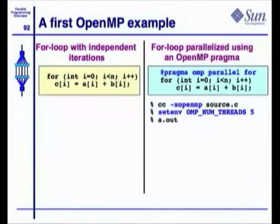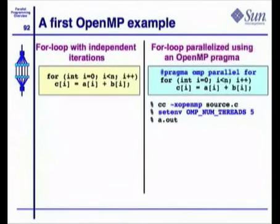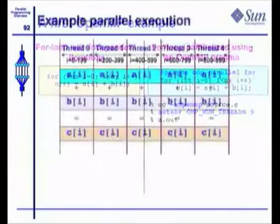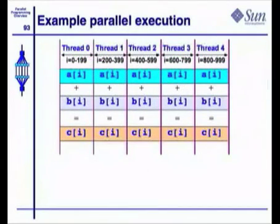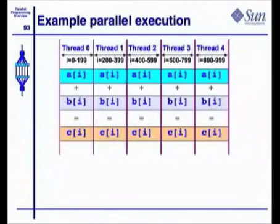I then have to tell the compiler this is an OpenMP program. I do that on the Sun compilers by specifying the X OpenMP option. I set the environment variable to the desired number of threads — in my case, five. I run, and this program will execute on five threads. And if that loop is a thousand long at runtime, here is how it will execute. Thread 0 will execute the first two iterations. Thread 1 will execute the next set of iterations, and so forth. This is all handled by the runtime system, and it will give me the parallelism that I was looking for.